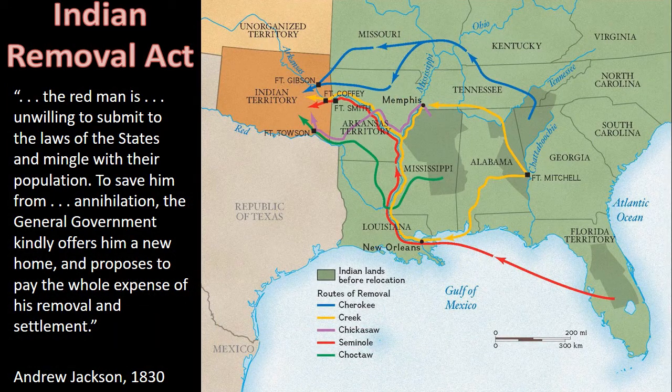Signed into law in May of 1830 by President Jackson, the Indian Removal Act gave him the power to negotiate for the removal of southern American Indian tribes to federal territory west of the Mississippi River. The act was strongly supported in the South, especially in Georgia. Jackson believed that the only way to humanely preserve the Indians was through relocation, as he thought that they would eventually die out, as the Indians of the Northeast had.